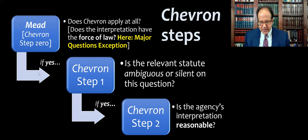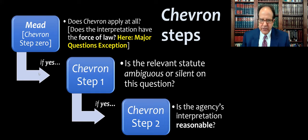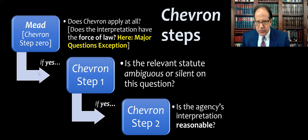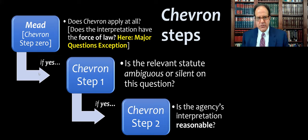Chevron step zero is the question of does Chevron deference even apply? There are a lot of different types of deference — Chevron deference, Skidmore deference — but bear with me. The original position in Mead and the cases that followed seems to be: does the interpretation have the force of law? Some things that agencies do that don't have the force of law — perhaps because they didn't do notice-and-comment rulemaking — wouldn't get Chevron deference. But here, notice that we're also saying at Chevron step zero that the major questions exception can kick in so that we don't proceed through the Chevron steps.